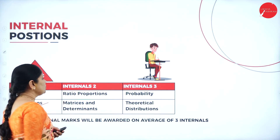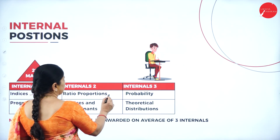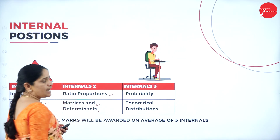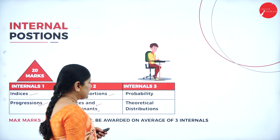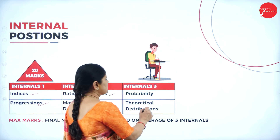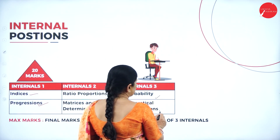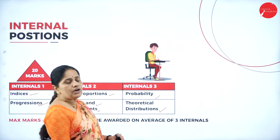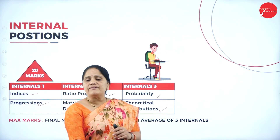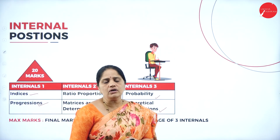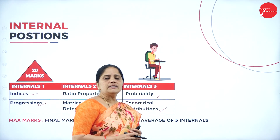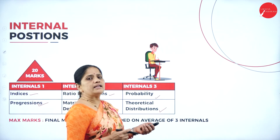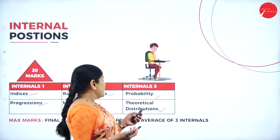In internals 2, we have ratio, proportions, matrices and determinants. And internal 3 will be related to probability and theoretical distributions. Final marks will be awarded on the average of the 3 internals — if you are attending all 3 internals, the final marks will be awarded based on that average.